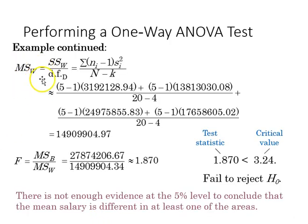Continuing on, our mean square within, use degrees of freedom in the denominator for that one, and there is the number for that.